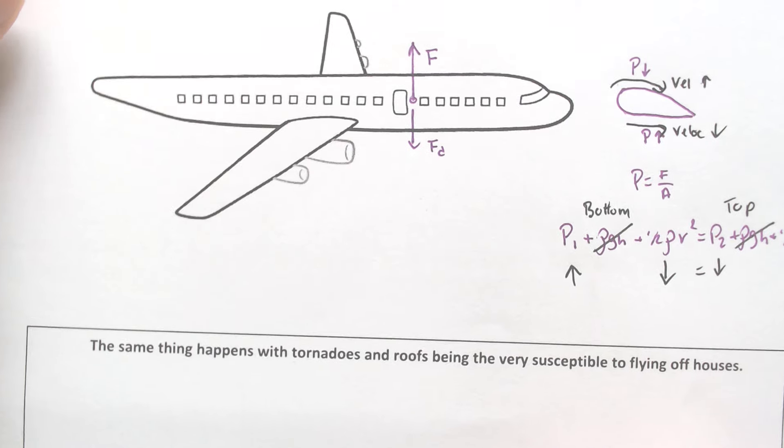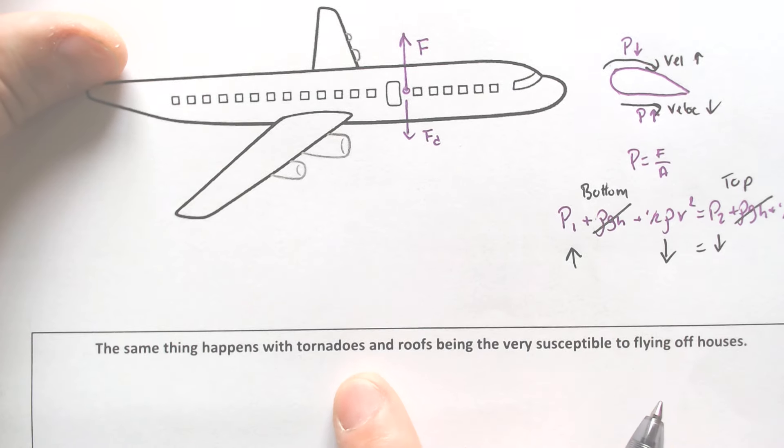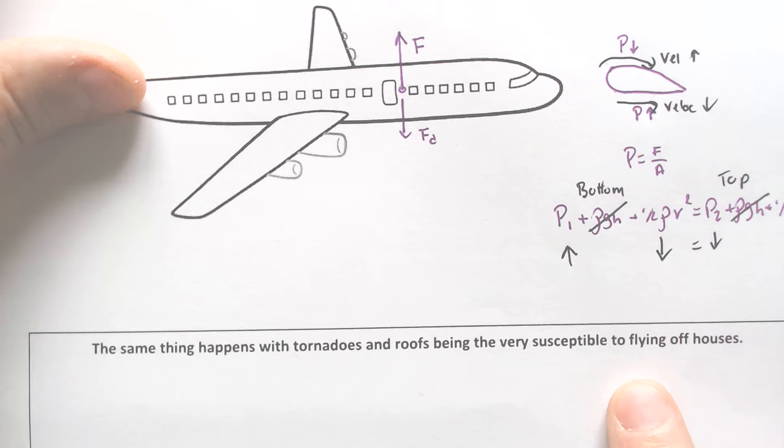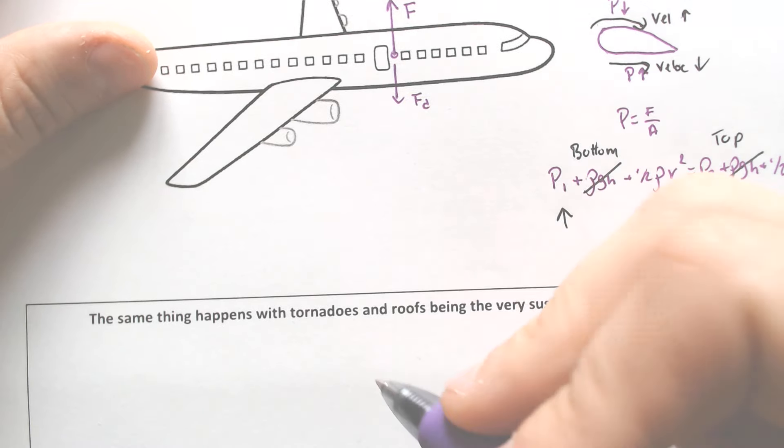The same thing can happen with tornadoes and things like that with roofs of buildings being susceptible to flying off.